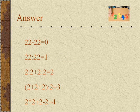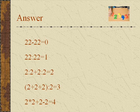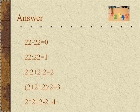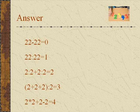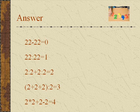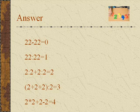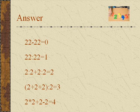22 divided by 22 equals 1. 2 divided by 2 plus 2 divided by 2 equals 2. 2 plus 2 plus 2 divided by 2 equals 3. 2 times 2 plus 2 minus 2 equals 4.